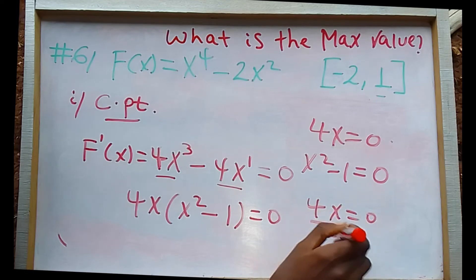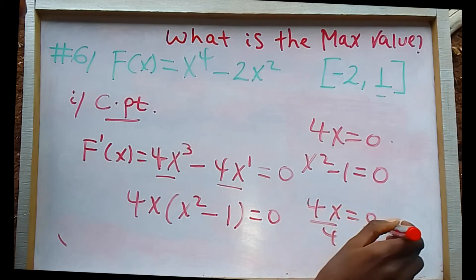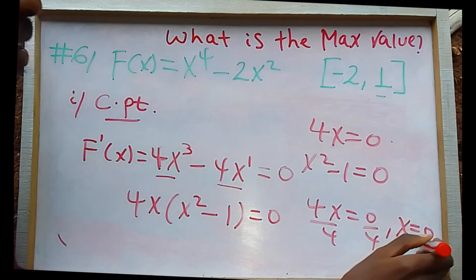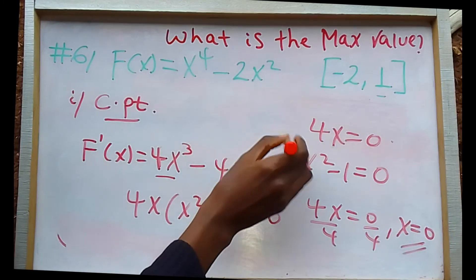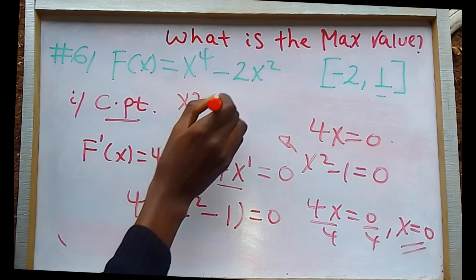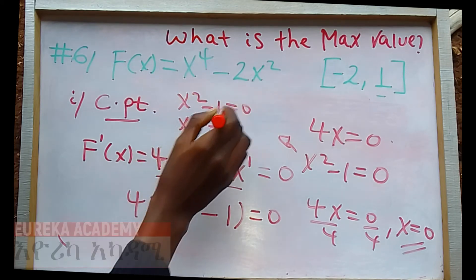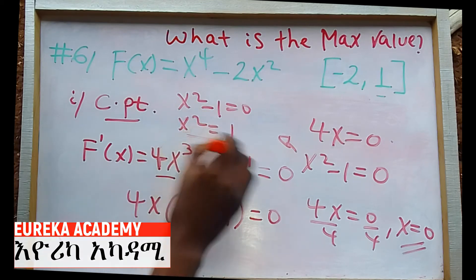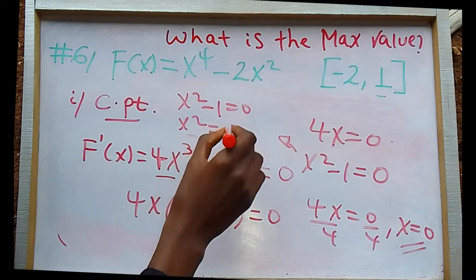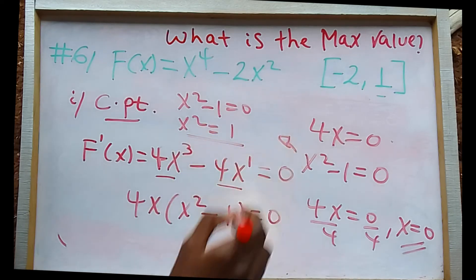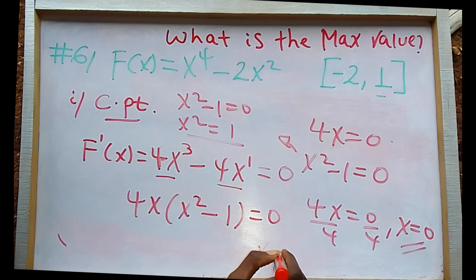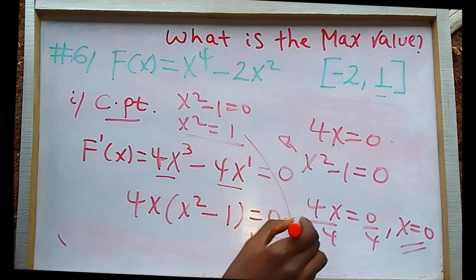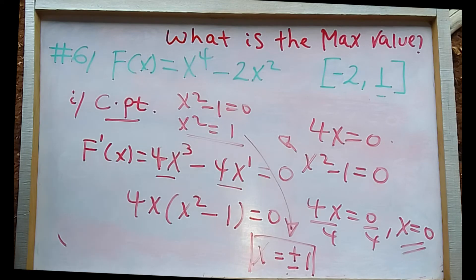4x equals 0, divide by 4, x equals 0. That's one critical point. Then x squared minus 1 equals 0, x squared equals 1.